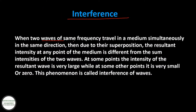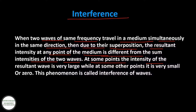Interference: when two waves of the same frequency travel in a medium simultaneously in the same direction, then due to their superposition, the resultant intensity at any point of the medium is different from the sum of the intensities of the two waves. At some points it is very small or zero. This phenomenon is called interference of waves.